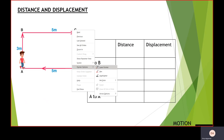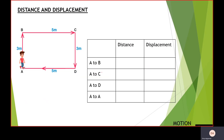Now let's solve a question to make the concept clearer. There is a boy who travels from point A to point D and back to A in a clockwise form. We have to find distance and displacement for various cases. For A to B, the distance would be 3 meters, and the displacement — since the initial and final positions differ by the same path — would also be 3 meters.